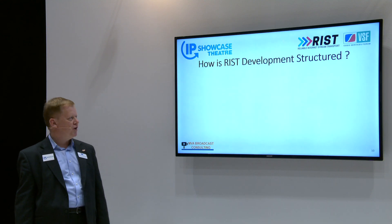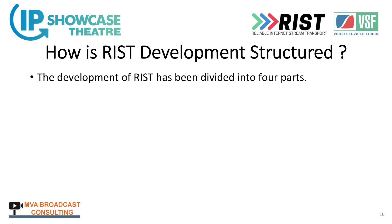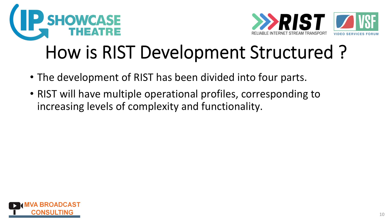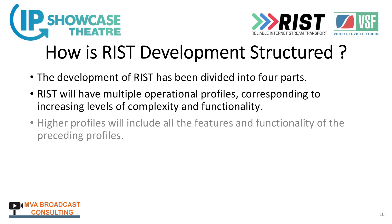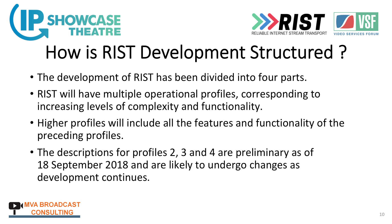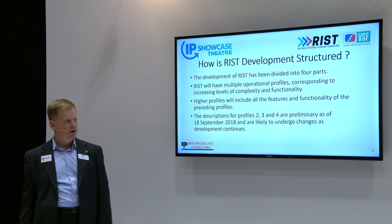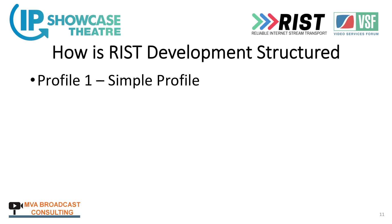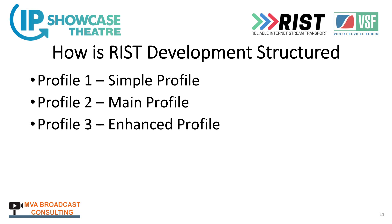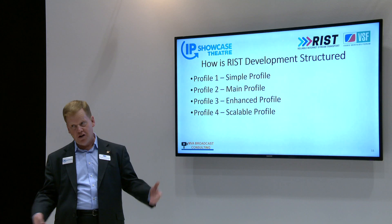How is RIST development structured? The development of RIST has been divided into four parts. RIST will have multiple operational profiles corresponding to increasing levels of complexity and functionality — in other words, we did the easy stuff first. Higher profiles will include all the features and functionality of the preceding profiles. Profile one is called the simple profile, profile two is the main profile, three is the enhanced profile, and four is the scalable profile.